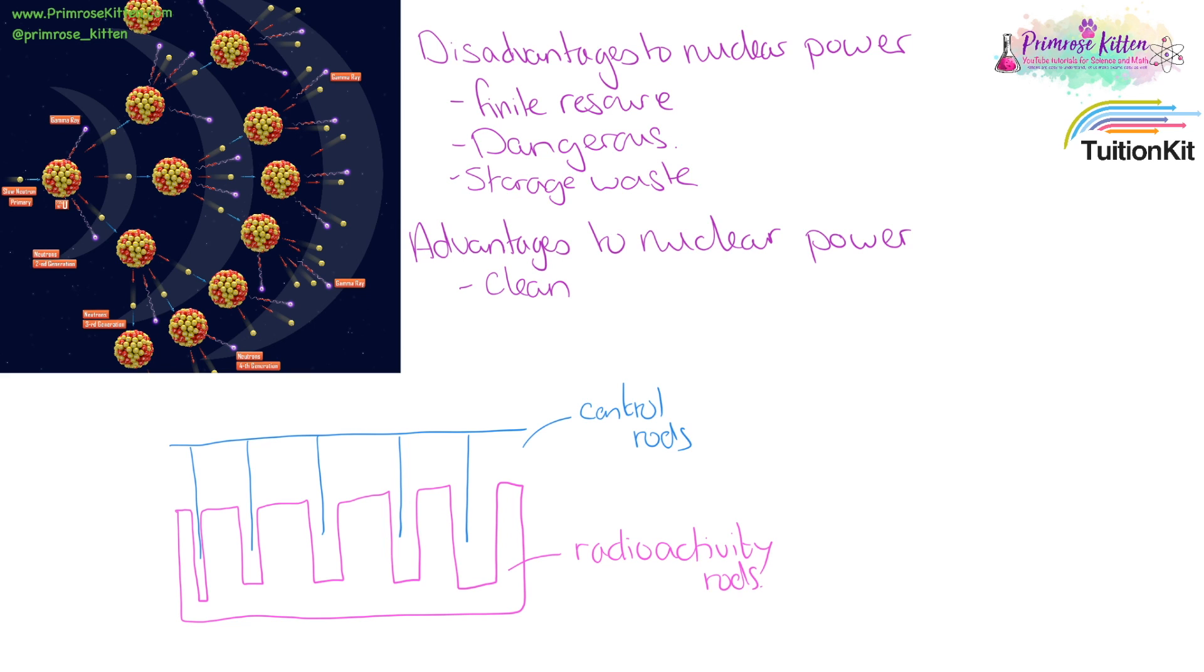If we want to control a nuclear reaction, we use control rods. We can move these up and down. When they are down, the radioactive rods have no way of potentially setting each other off or setting the chain reaction off, and then they can be moved up to control the amount of reaction that takes place.